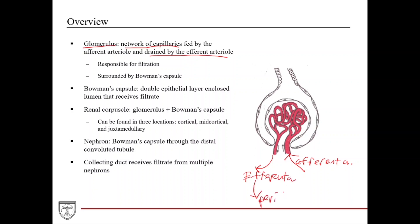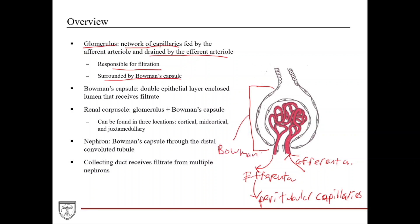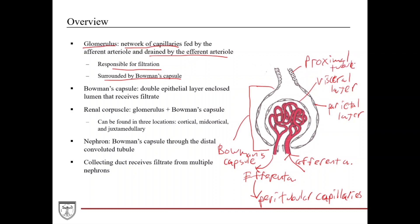The glomerulus is responsible for filtration, and it's surrounded by a structure called Bowman's capsule, which is this enclosed double epithelial layer — like a sac — that surrounds this network of capillaries. It's a double epithelial layer: you have a visceral layer, which serves as one of the barriers in the filtration apparatus, and then a parietal layer that continues with the rest of the nephron — the proximal tubule. The space throughout this lumen is called Bowman's space.